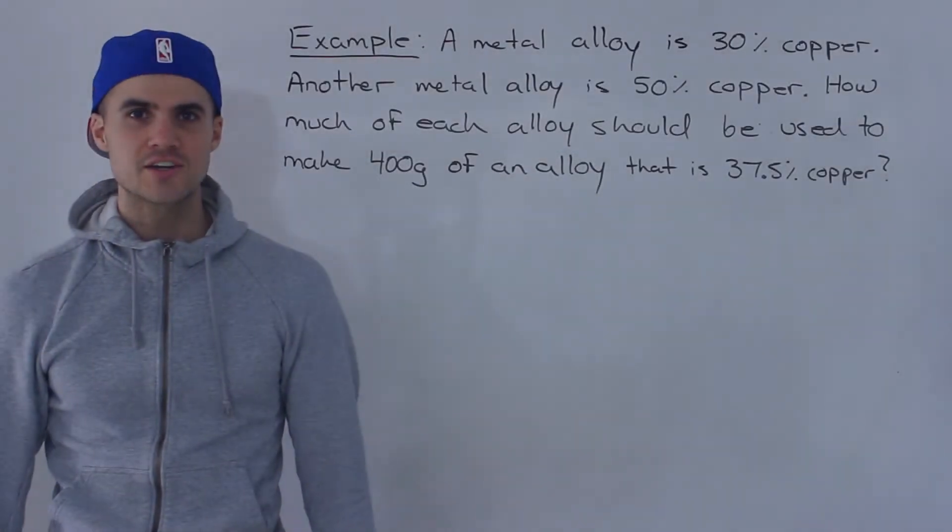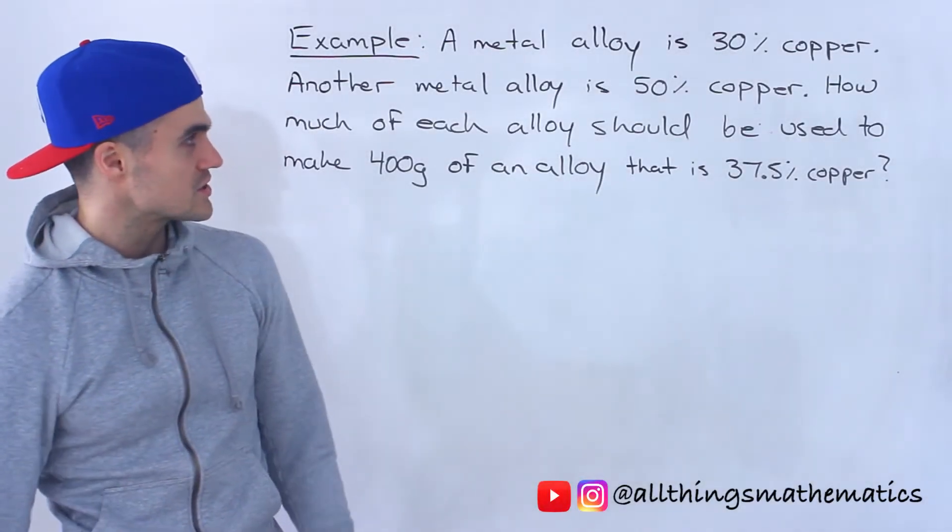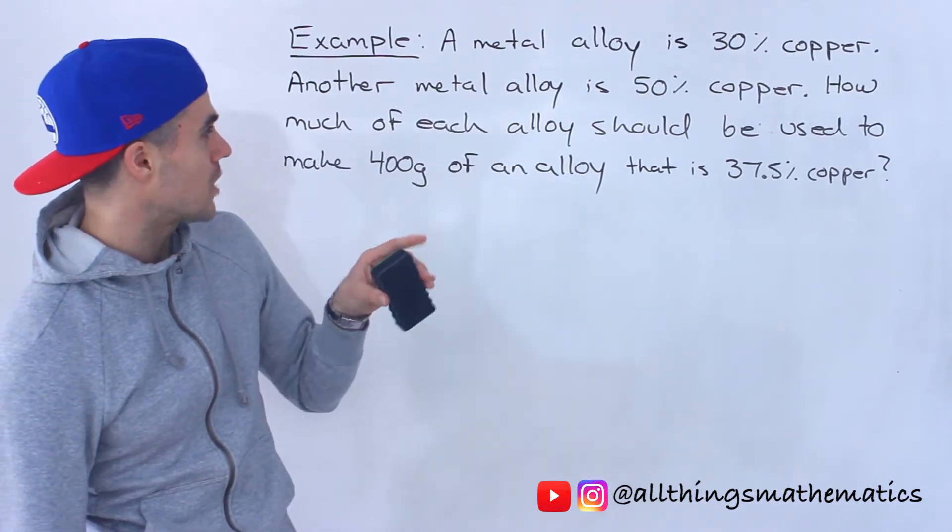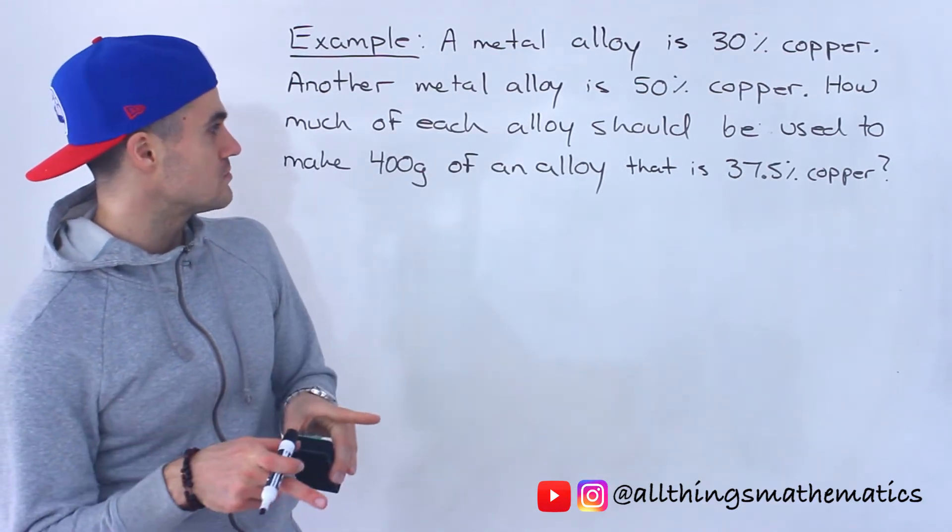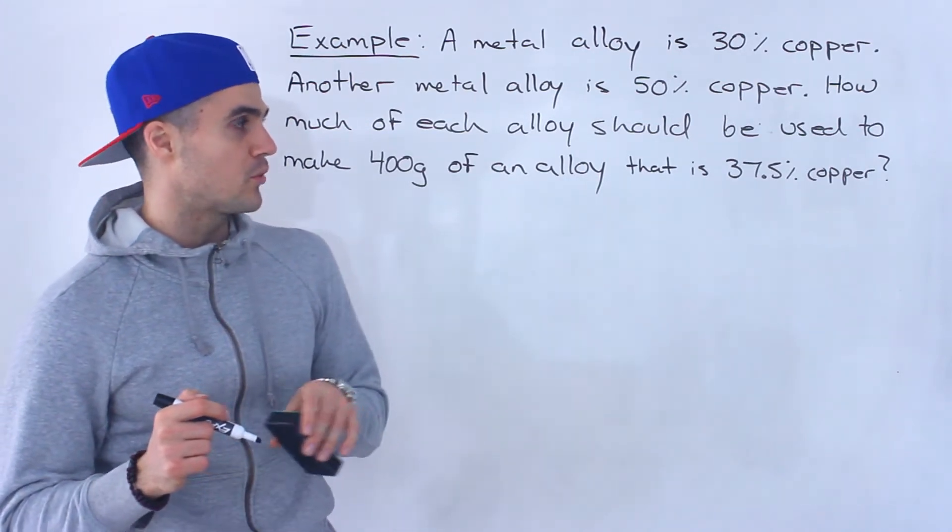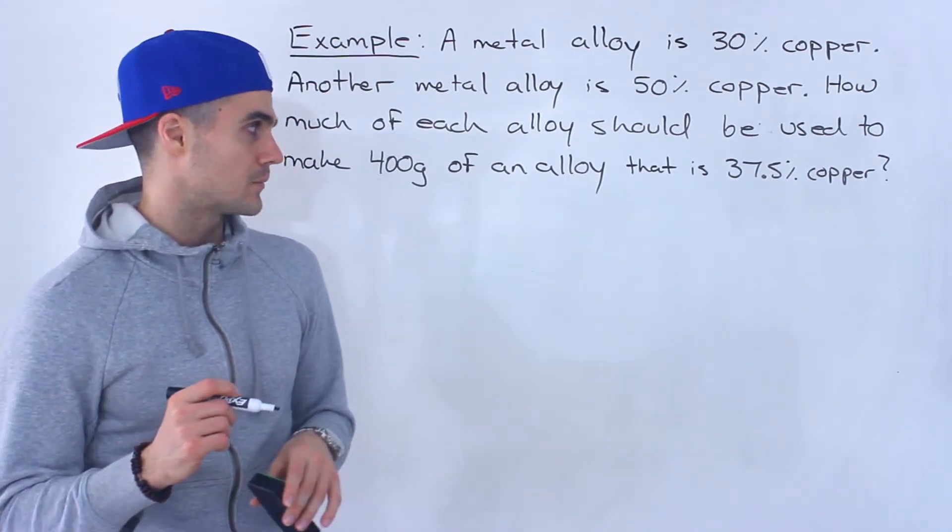What's up everyone, welcome back, Patrick here moving on to the next question. So a metal alloy is 30% copper, another metal alloy is 50% copper. How much of each alloy should be used to make 400 grams of an alloy that is 37.5% copper?